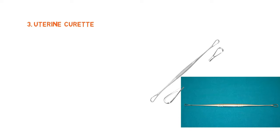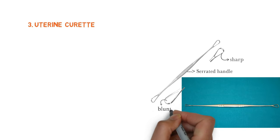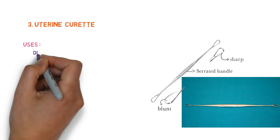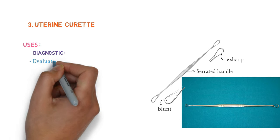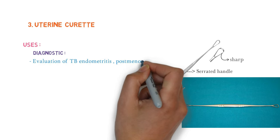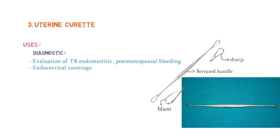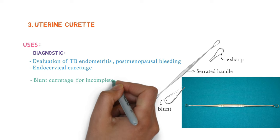The uses of the uterine curette are divided into diagnostic and therapeutic. Diagnostic uses include evaluation of tuberculosis, endometritis, postmenopausal bleeding, and endocervical curettage. The blunt curette is used for incomplete, missed, or septic abortion.